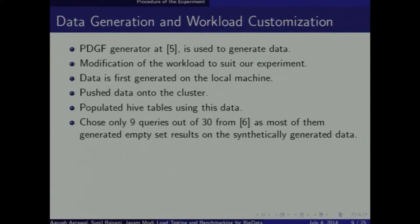Once the system was set up, the first task was to generate data. In a benchmark, you always need to generate data in the format required — you can't pick up data from anywhere. The PDGF generator, a parallel data generation framework provided by Big Bench itself, was used to generate data in its required format. We then pushed the data onto the Hadoop cluster.